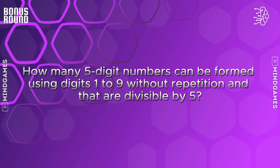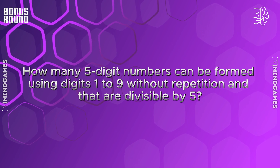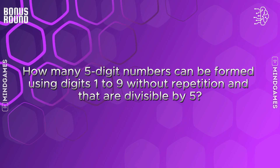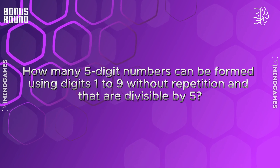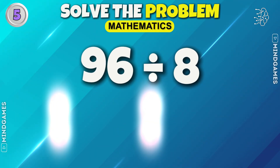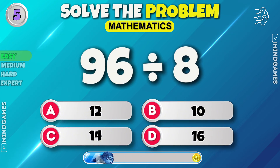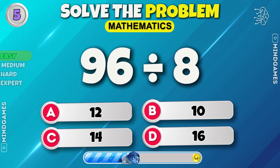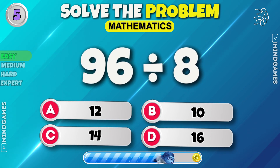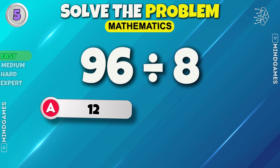How many five-digit numbers can be formed using digits one to nine without repetition and that are divisible by five? Take your time, think, and reply with your answers in the comments below. Any guesses? 12 is the correct answer.